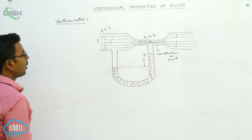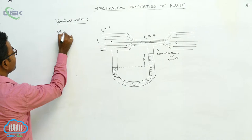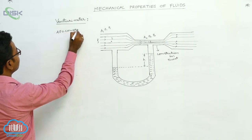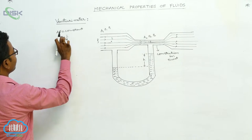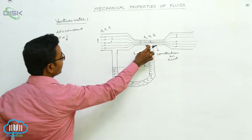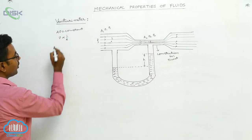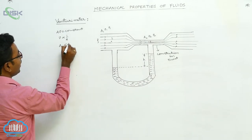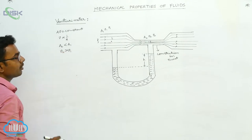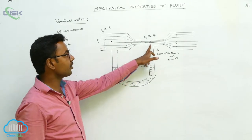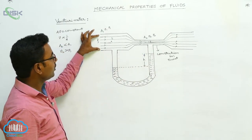According to the equation of continuity, A times V equals constant, so velocity is inversely proportional to area. At the constriction, area A2 is less than A1, so velocity V2 is greater than V1. The velocity at the constriction is greater than the velocity in the larger tube.